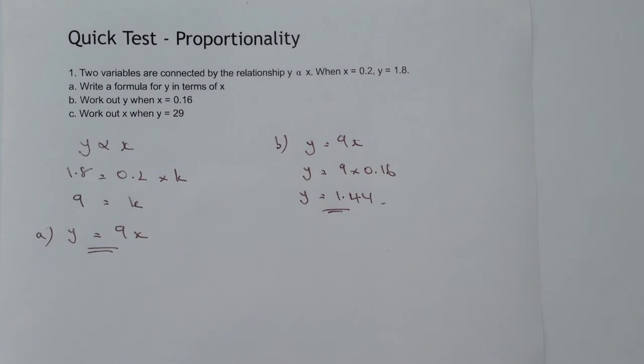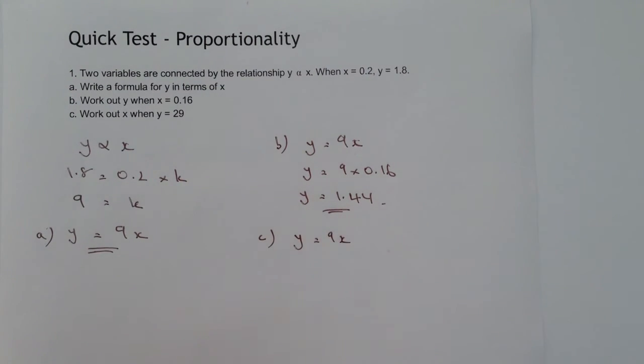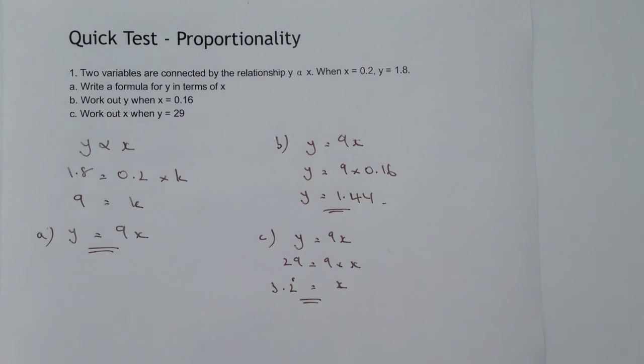Question c works in exactly the same way. Again, write out the formula, and it asks us to work out x when y equals 29. So 29 equals 9 times x, and if we divide through by 9, it means that x equals 3.2 recurring, and that will give us the answer to part c.